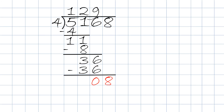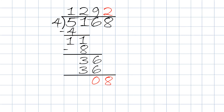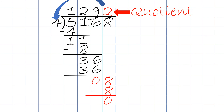We then take 8 divided by 4, and the answer will be 2 — no decimal, nothing, just a solid 2. We then take 2 times 4, which will be 8. There will be no remainder, because 8 minus 8 will be 0. So the answer is 1,292. That's the quotient.